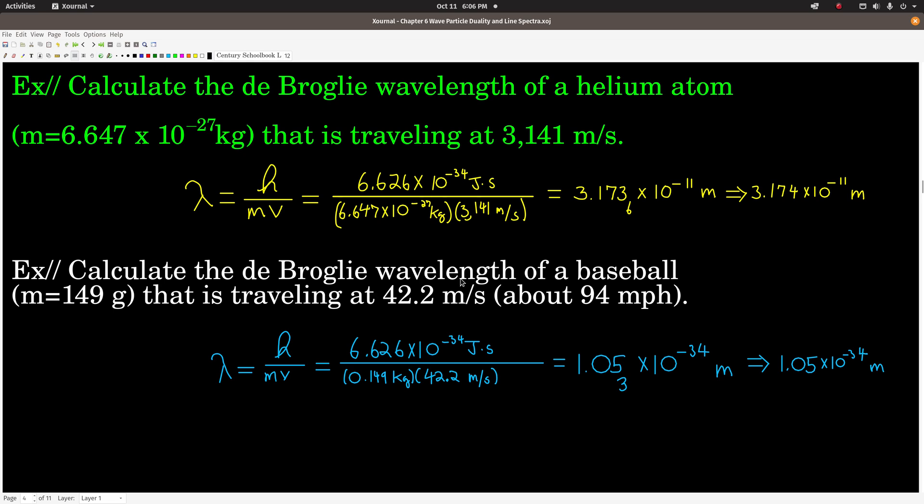Now let's do the same calculation though for a baseball. So a professional baseball mass is about 149 grams. Let's say a real good pitcher throws at about 94 miles per hour, which is 42.2 meters per second. Let's calculate that de Broglie wavelength. So we plug into de Broglie's equation, Planck's constant over the mass, remember that has to be in kilograms, times the velocity, and we get 1.05 times 10 to the minus 34 meters. That, guys, is incredibly small. Well, there's no way we can even come close to measuring that or seeing that. So even though theoretically it does have a wavelength, it's not something that we're going to be able to detect at least anytime soon.